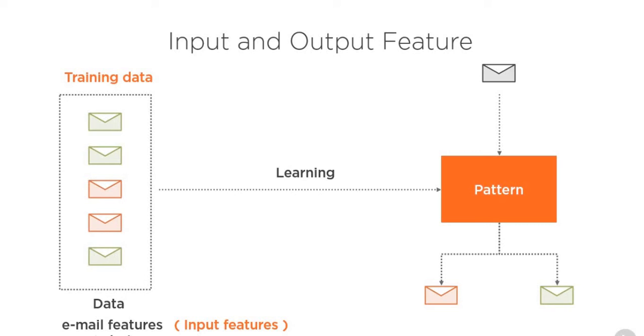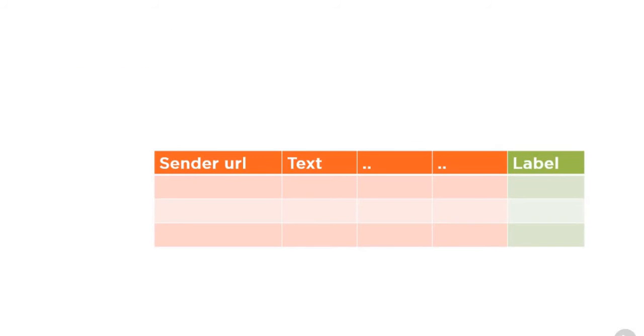Input features are also referred to as predictors because they are used to predict the output. For output, you may also hear the term response or outcome. Overall, you can think of training data as a spreadsheet where you have columns for input features and then a column for output feature.